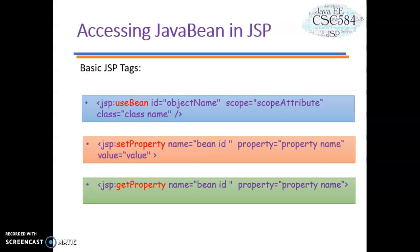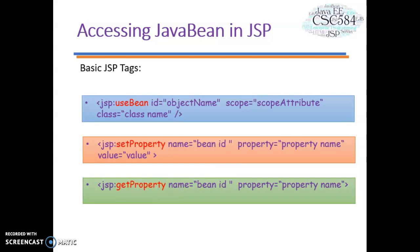Let's look at accessing Java Beans in JSP. There are three basic JSP tags that allow us to access Java Beans within JSP. First, useBean — this tag makes a Java Bean available locally within a JSP file. Second, setProperty — this tag modifies the value of a bean property. Third, getProperty — this tag accesses the value of a bean property.